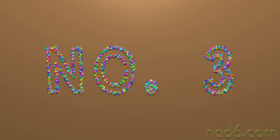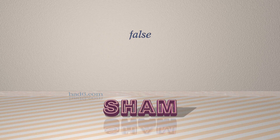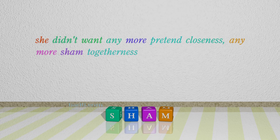Number 3: Sham. Which means false. For example, she didn't want any more pretend closeness, any more sham togetherness.